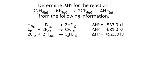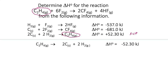Here's another problem: determining the enthalpy for ethylene, C2H4, plus six fluorine gas making two carbon tetrafluorides and four hydrofluoric acid gas. Starting with C2H4—we find it in the equations, but it's on the product side there, so we flip that equation to get the reverse reaction. Our formerly positive enthalpy is now negative: negative 52.30 kilojoules.